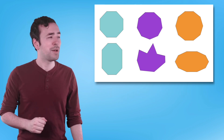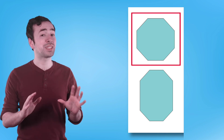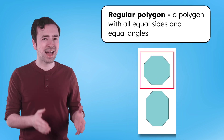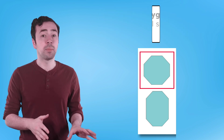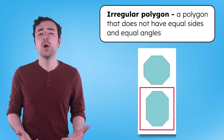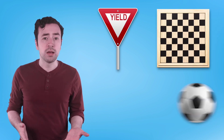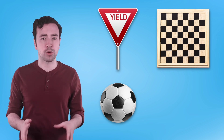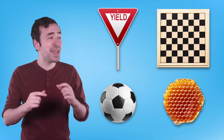This octagon has sides that are all different lengths, but this one has sides that are all the same length. When a polygon has side lengths and angle measurements that are all the same, we call it a regular polygon. When they're different lengths and the angles aren't all the same, we call it an irregular polygon. When we notice polygons in the world around us, they'll often be regular — a yield sign is a regular triangle, the squares in a checkerboard are regular quadrilaterals, a soccer ball is made of regular pentagons and regular hexagons, and a honeycomb is made of regular hexagons.